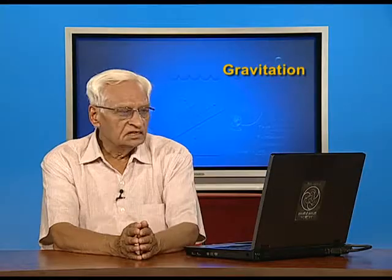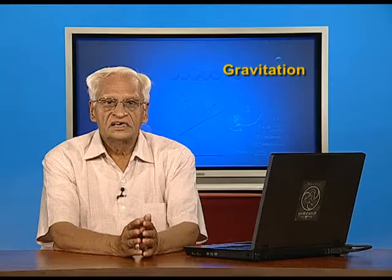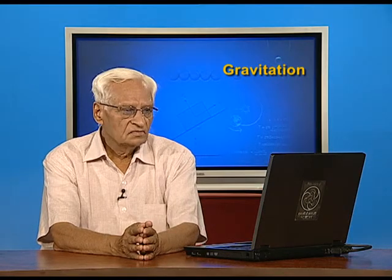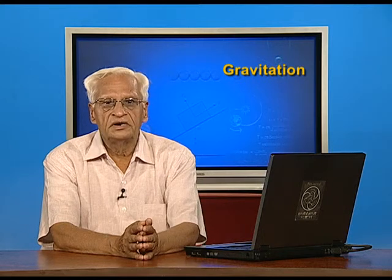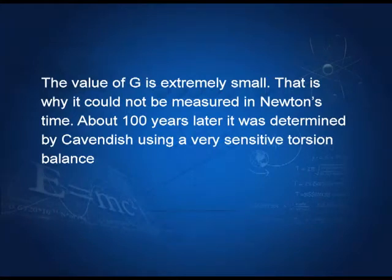As you can see, the value of G is extremely small, which means that the force of gravitation is quite weak. Since the value of G is very small, it could not be determined in the time of Newton. About 100 years later, it was determined by Cavendish using a very sensitive instrument called the torsion balance.